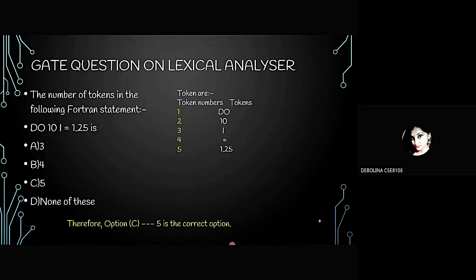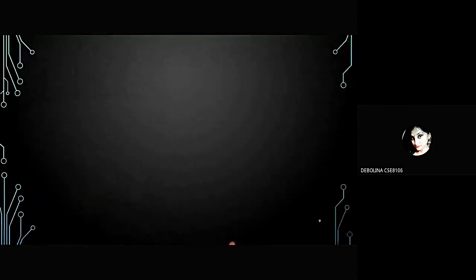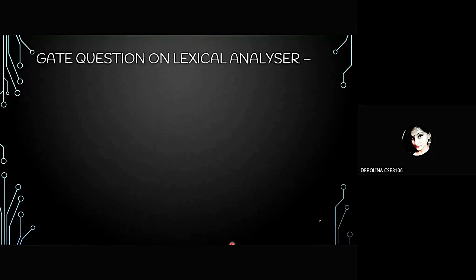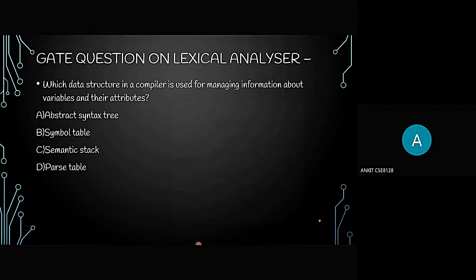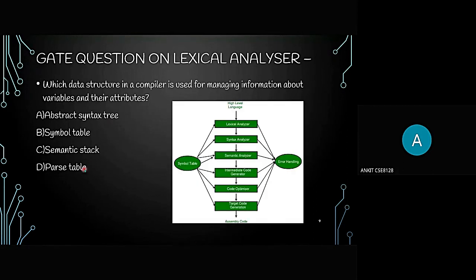This question asks: which data structure in a compiler is used for managing information about variables and their attributes? The options are: A) Abstract Syntax Tree, B) Symbol Table, C) Semantic Stack, D) Parse Table. The symbol table is the correct option, because the parse tree is used for string parsing, not for managing variable attributes.